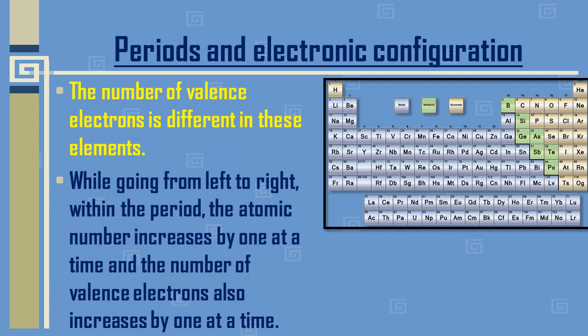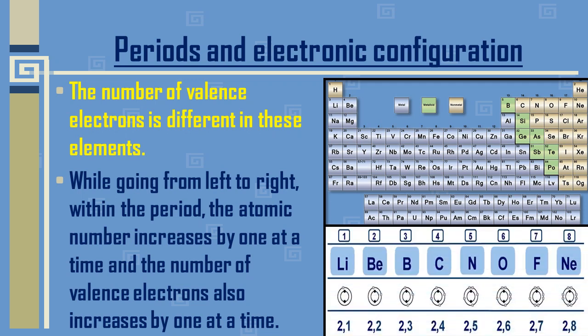The number of valence electrons is different in these elements. Valence electrons are the electrons present in the outermost shell. While going from left to right within a period, the atomic number increases by one at a time, and the number of valence electrons also increases by one at a time. The shell remains the same, but the number of electrons increases from one to eight.